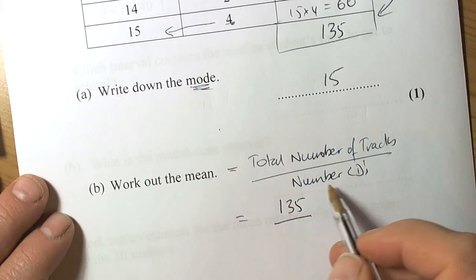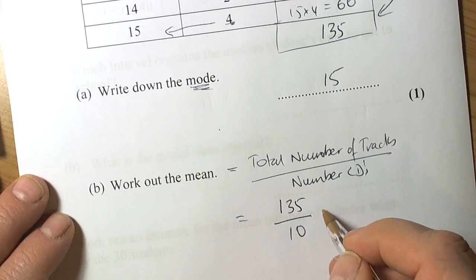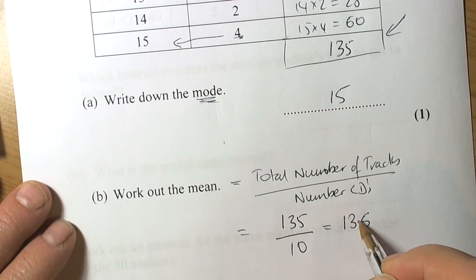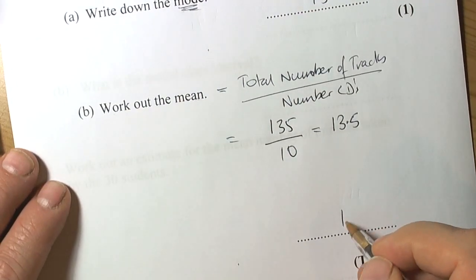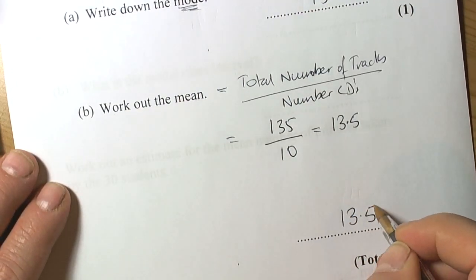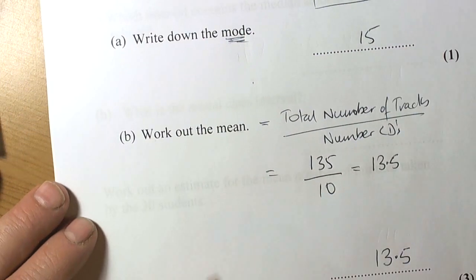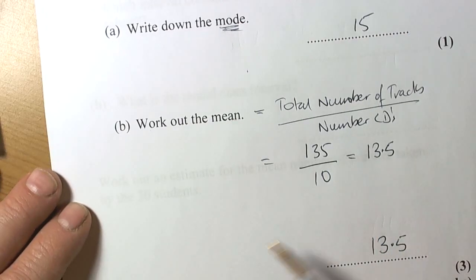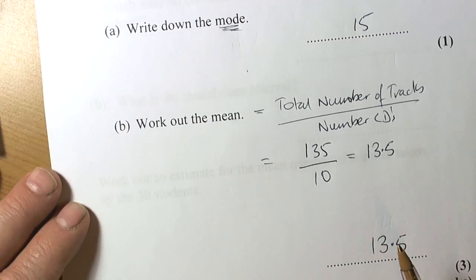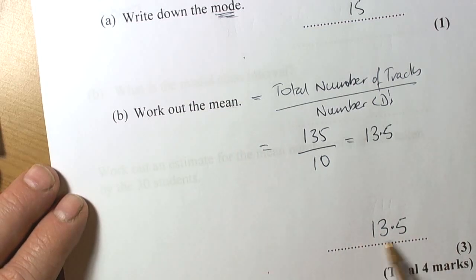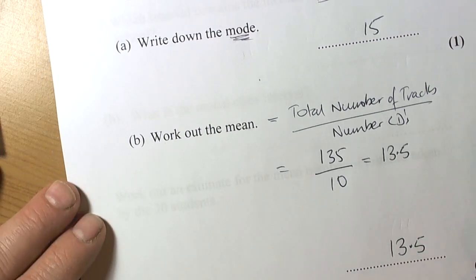To work out the mean, we take the total number of tracks, 135, and divide by the number of CDs, which is 10. When we divide by 10, all the digits move down one place value, so it becomes 13.5. Don't write that as a whole number because for the mean average we allow decimals. We might compare this with another set of CDs, and rounding to whole numbers introduces errors when doing mean average comparisons. Always leave them as decimals.